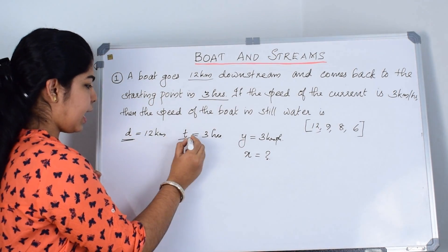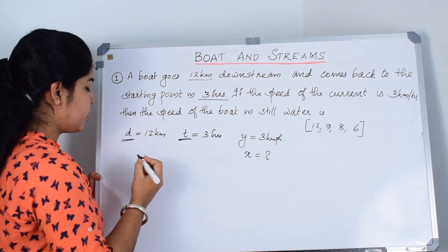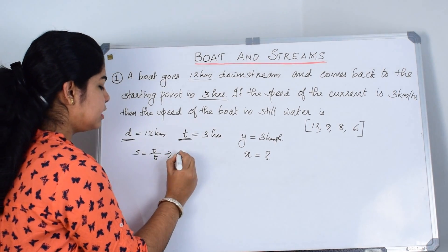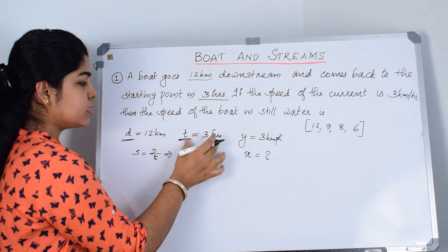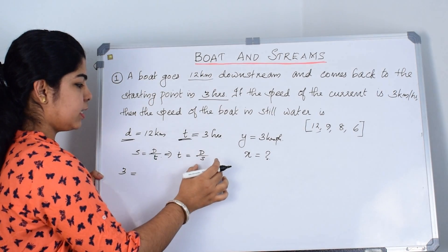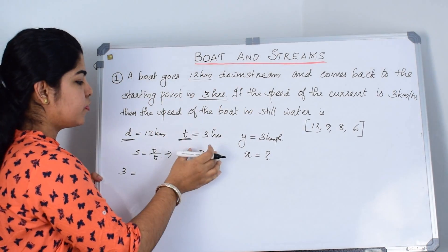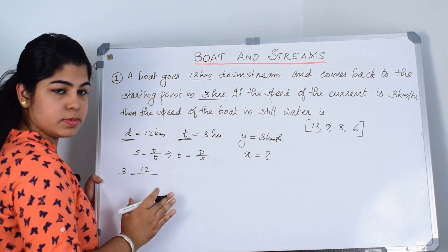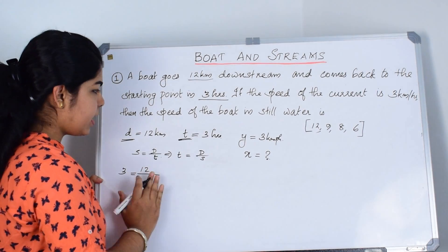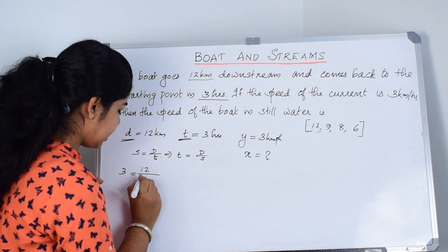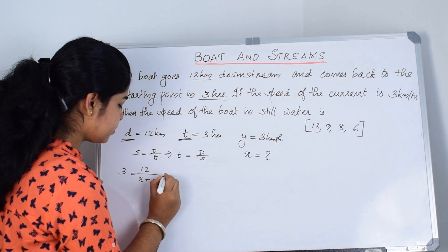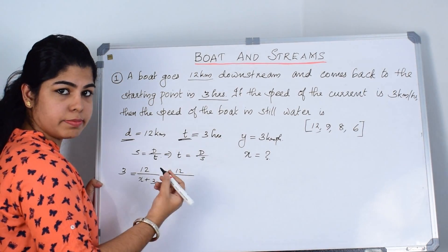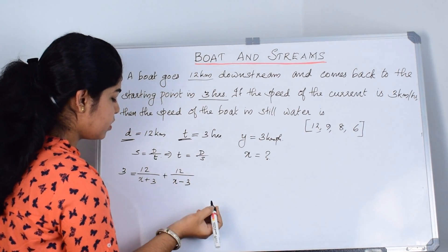We have the values of D and T, so we apply the basic time and distance formula: T equals distance divided by speed. We have two cases — downstream and upstream. For the downstream case: distance is 12, speed is X plus Y, so that's X plus 3. For the upstream case: distance is 12, speed is X minus Y, so X minus 3. This gives us the equation: 3 equals 12/(X+3) plus 12/(X−3).